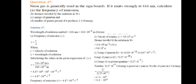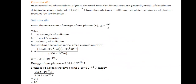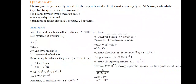Number of quanta present in 2 Joules of energy = 2 ÷ 32.27×10⁻²⁰ = 6.2 × 10¹⁸ quanta.